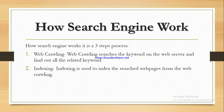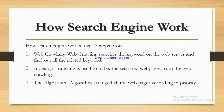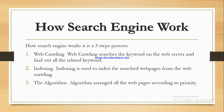The second step is indexing, and the third step is algorithm. The algorithm arranges all web pages according to priority — it is a method by which web pages are indexed and listed in order of importance, so that the most relevant and matching data related to what we searched is shown on a priority basis.